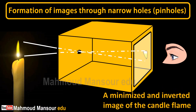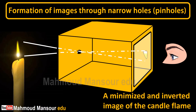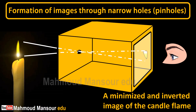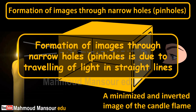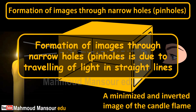Observation: A minimized and inverted image of the candle flame is formed on the semi-transparent paper. Conclusion: The formation of images through narrow holes or pinholes is due to the travelling of light in straight lines.